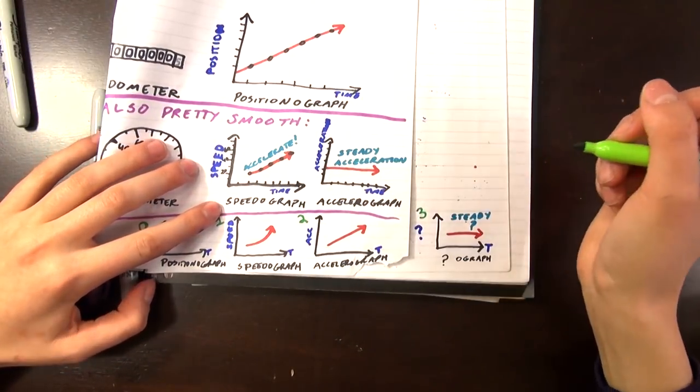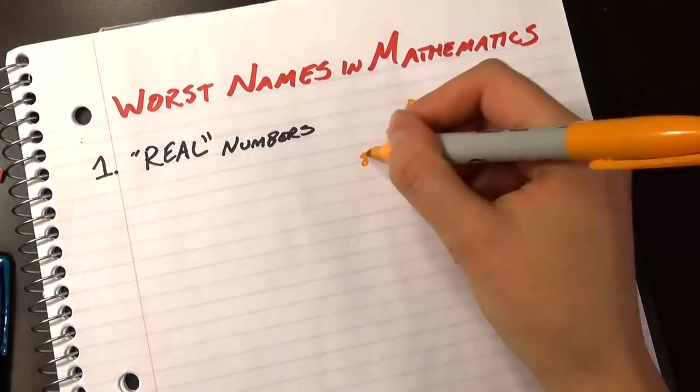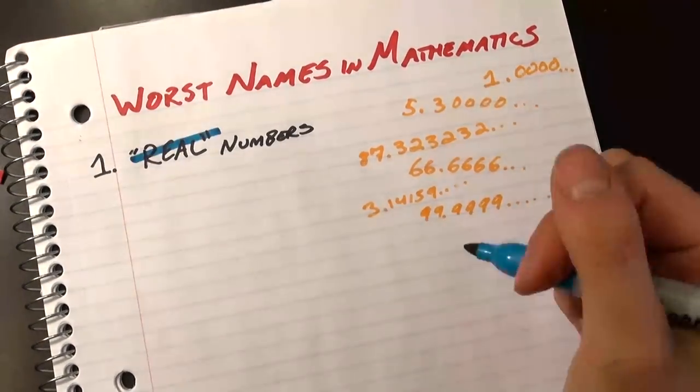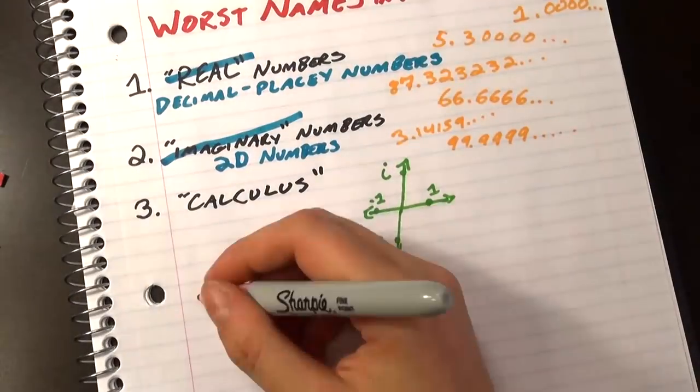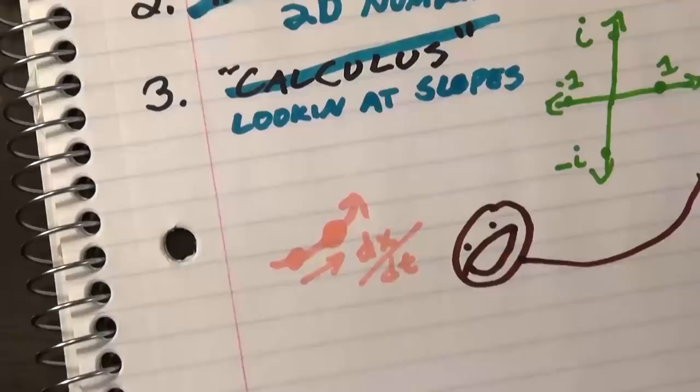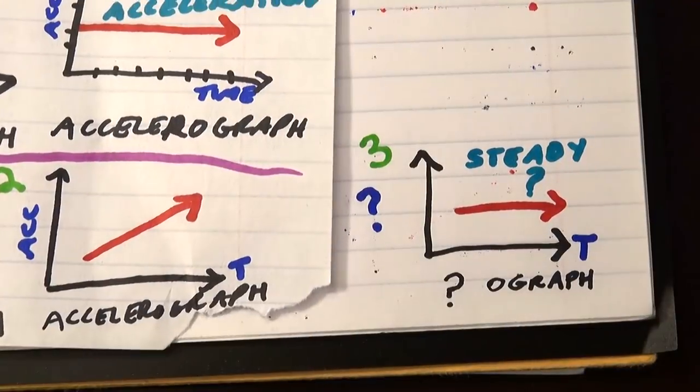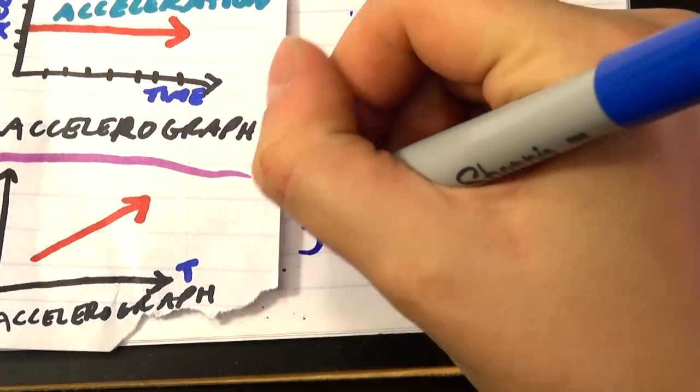Sometimes mathematicians come up with really terrible, confusing names for things like real numbers instead of decimal-placey numbers, and calculus instead of looking at slopes. But every once in a while, someone gets it right, which is why the third derivative of position over time is called jerk.